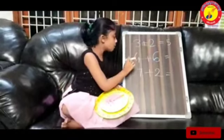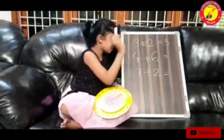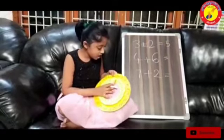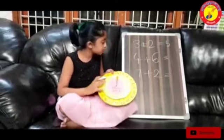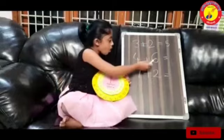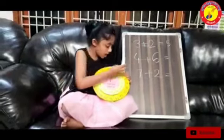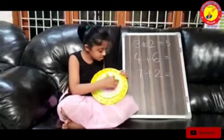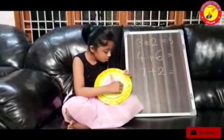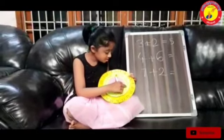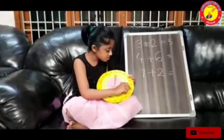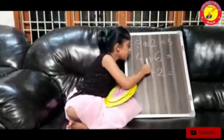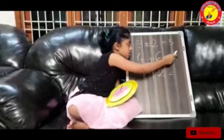The second problem is 4 plus 6. We have to move this arrow near 4. After, we have to see where is the 6 in this circle? The 6 is here. So the answer is 10. 4 plus 6 is equal to 10.